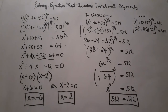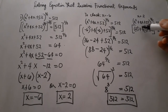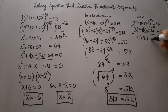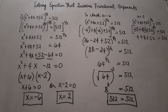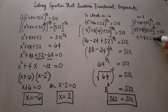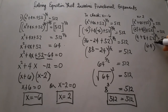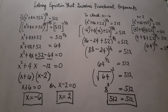We simplify: 2 squared is equal to 4. Positive 8. Plus 52. Don't forget to keep the raising power of 3 halves, equal to 512. We can add all these since they share the same sign: 52 plus 8 is 60, plus 4 is 64. Don't forget to put the raising power of 3 halves.